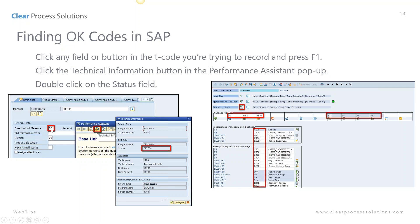For example, you click on a field, click on technical information, and that brings up a screen where you can see the field name and also the screen field name. If you double-click on status it will bring up a screen showing all of your function keys — for example save is BU, end is END, page forward, page back, and more. Each T code will have different okay codes and you can drill into those if you want to see them.